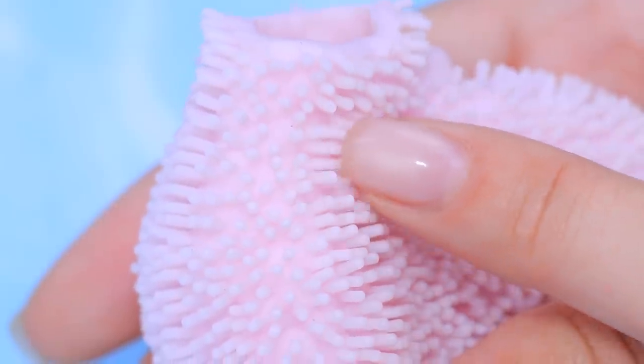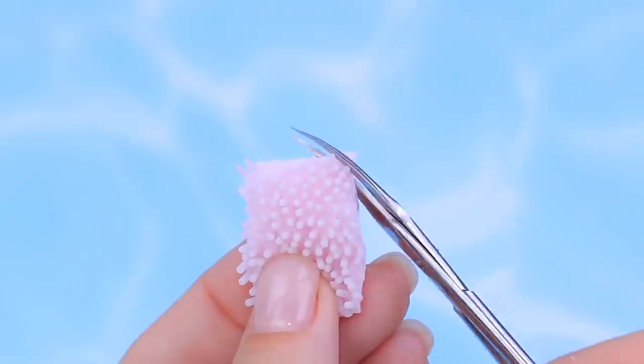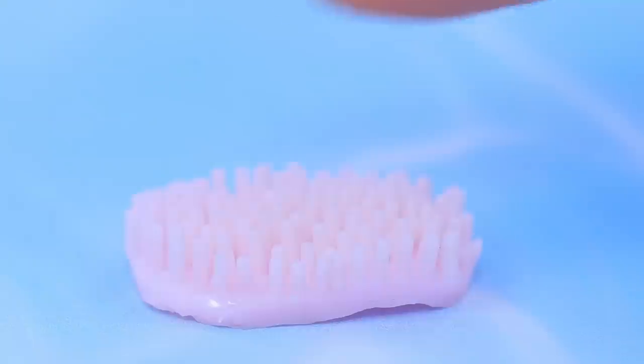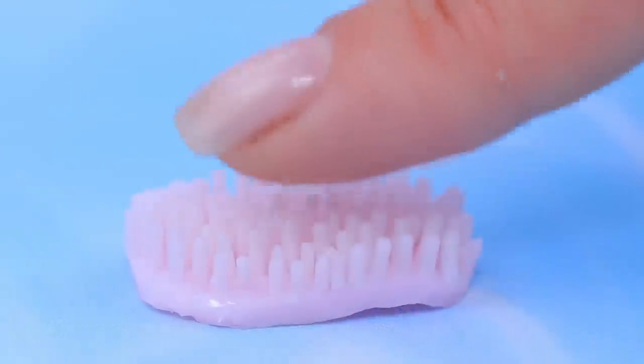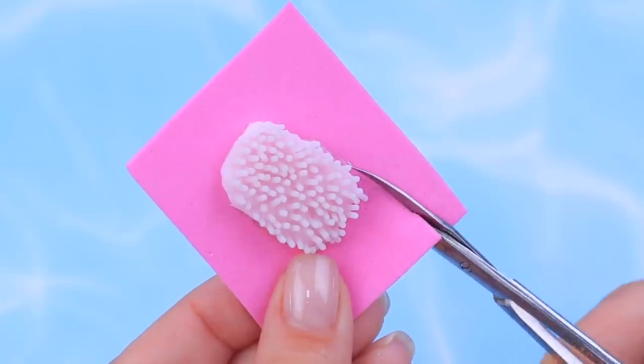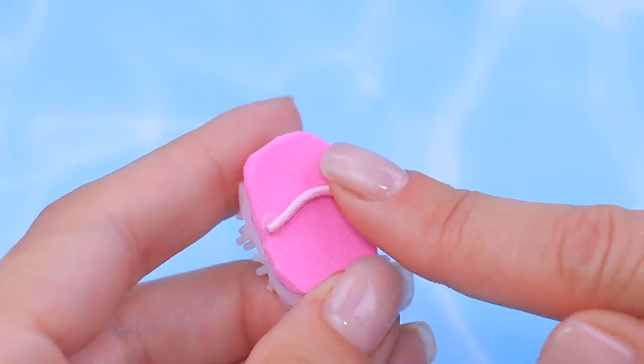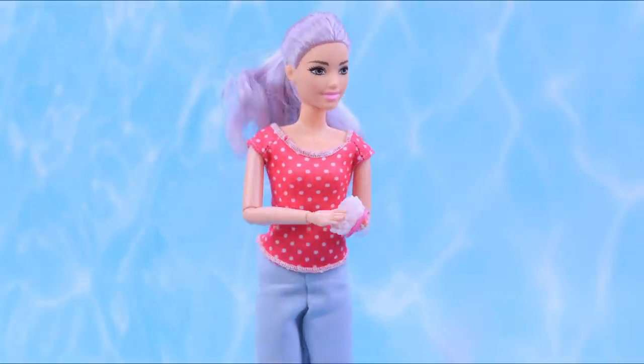This dog brush can help us clean even the thickest fur! Cut a rectangular piece out of a rubber squishy. It feels so nice! Glue it to a sheet of foam paper and remove the excess. Add an elastic cord to the top. The brush is ready for business!